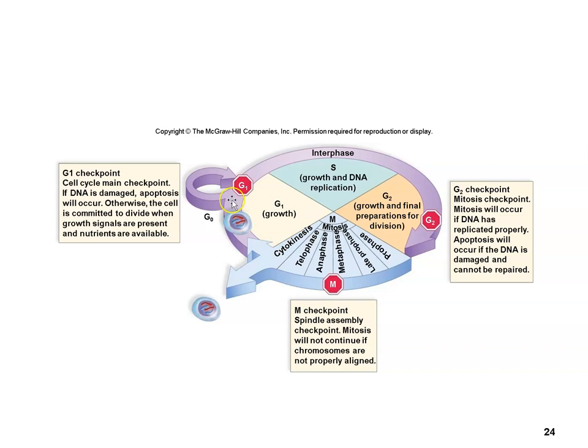I would definitely pause here and study this picture — there are multiple checkpoints we'll talk about in class. G1, S, G2, mitosis, cytokinesis — that is the general flow of the cell cycle. Then there's G0, which is like stalled growth. G1 is growth. S is growth and DNA replication. G2 is growth and preparations for cell division leading into mitosis, then finally cytokinesis.